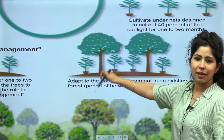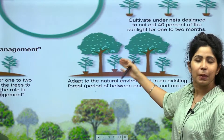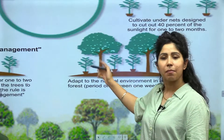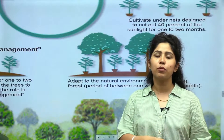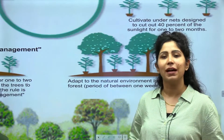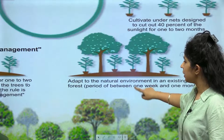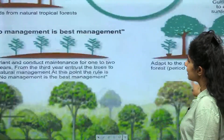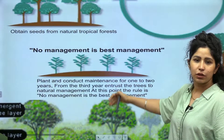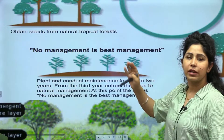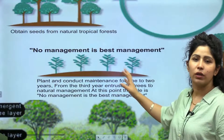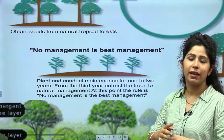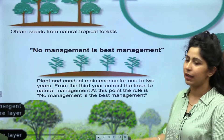The saplings are first planted in a nursery to grow upward, then cultivated under nets designed to cut out 40% of sunlight for 1 to 2 months. Then they are taken to the open area, outside the simulated net environment, to help them adapt to the local environment and local seasons. You keep the saplings in open air and open sunlight so that when you finally plant them on the land, they don't die out.